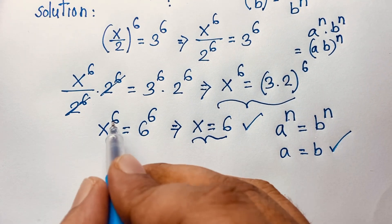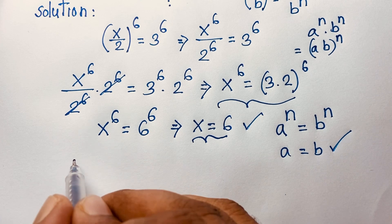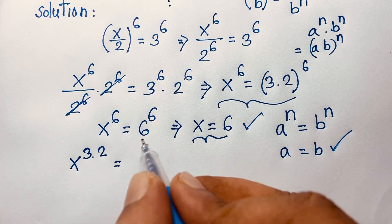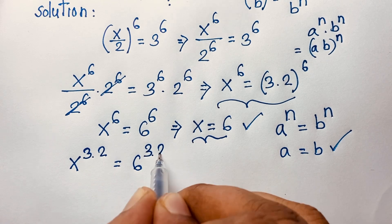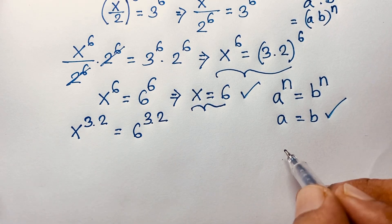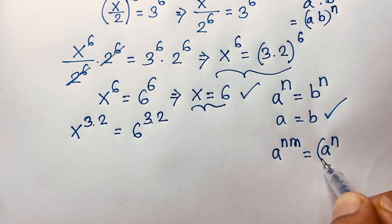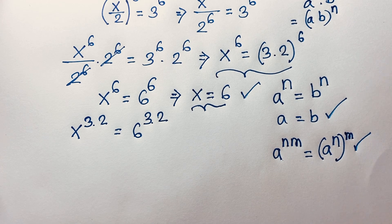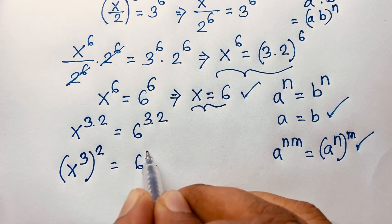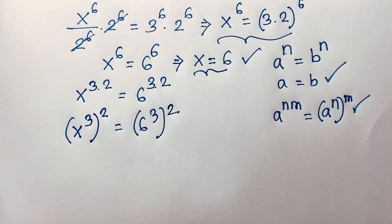To find the other 5 roots, note that x^6 can be written as x^(3×2). Similarly, 6^6 = 6^(3×2). Using the exponential law a^(nm) = (a^n)^m, we can write (x^3)^2 = (6^3)^2.